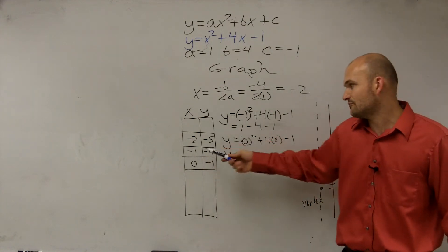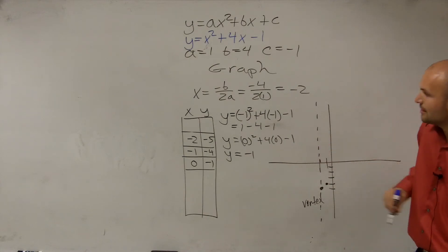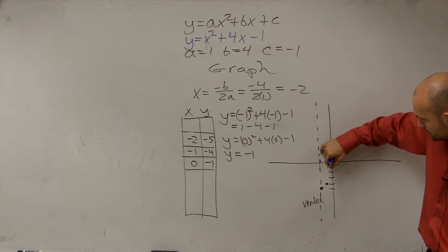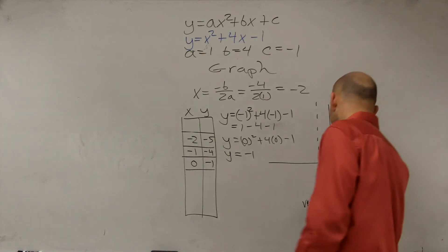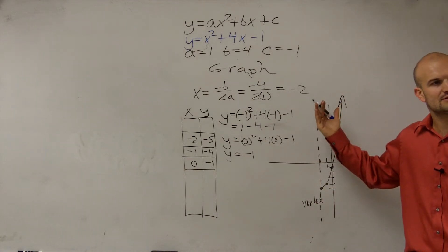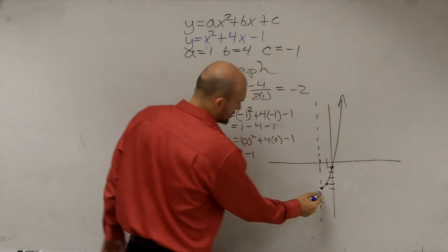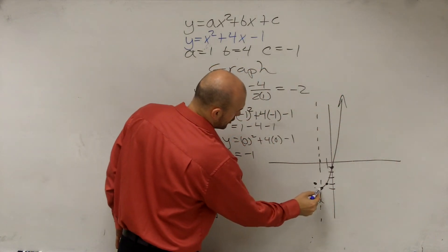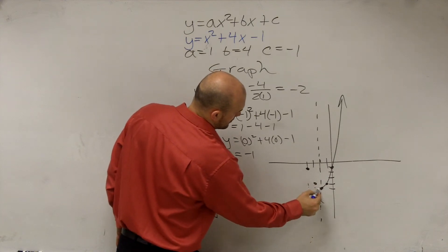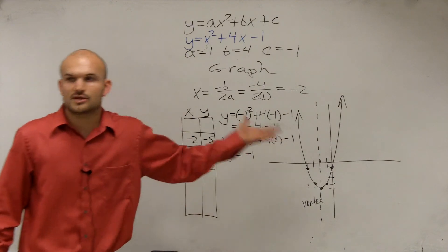Then we graph the next point, negative 1, negative 4. Negative 1, down negative 4. Then we graph the next point, 0, negative 1, which is our y-intercept. So now we connect those points like that. And then, what does the axis of symmetry tell us we can do? Just reflect it over. So I can go over 1, up 1, over 2, up 4.